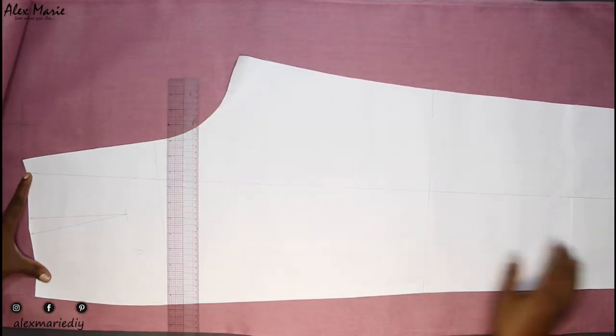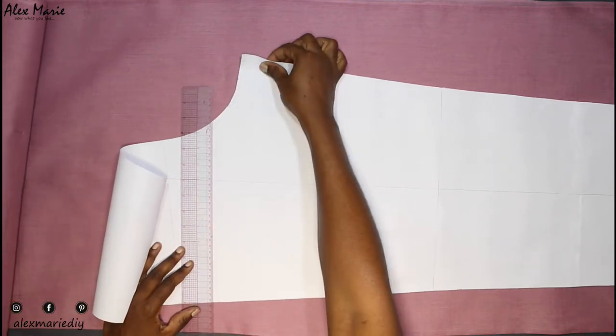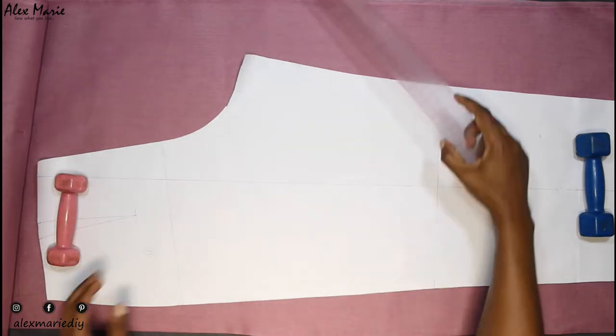Next I'm doing the back. Remember once again, align the grain line with the selvedge of your fabric.